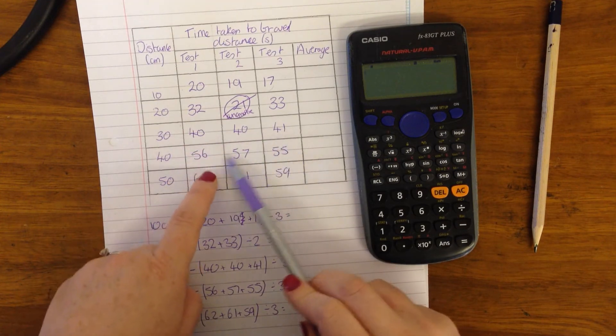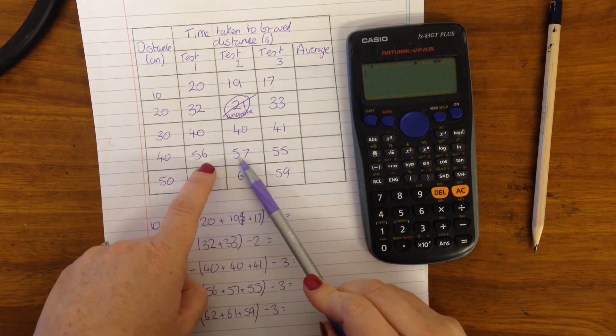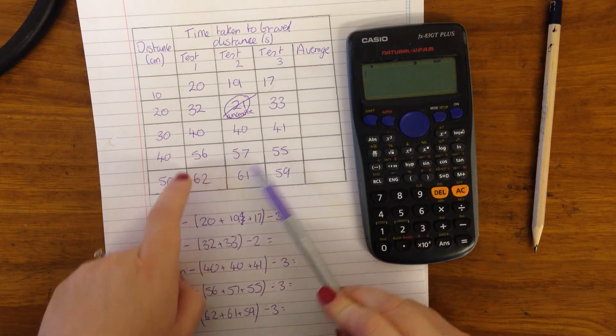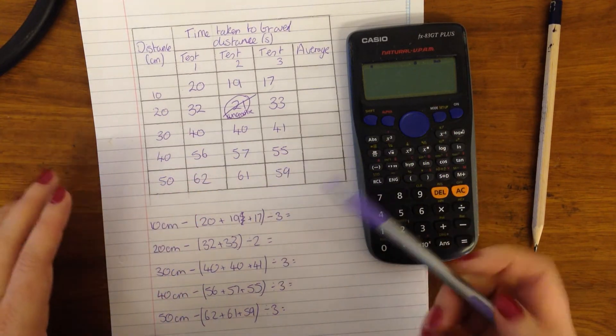And then we're going to ignore it. 40, 40 and 41, that's fine, that's pretty close. 56, 57, 55, that's close, that's fine. 60, 61, 59, that's fine.